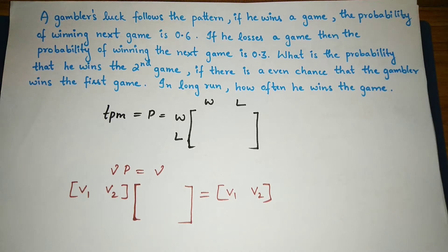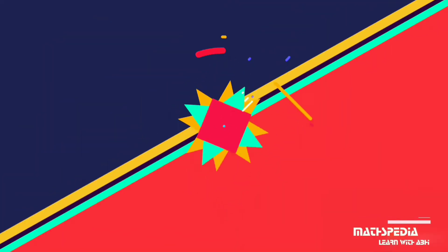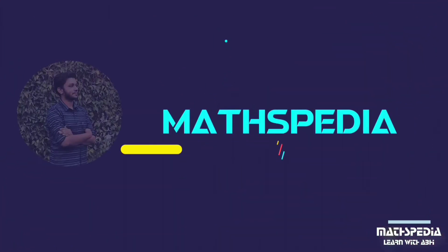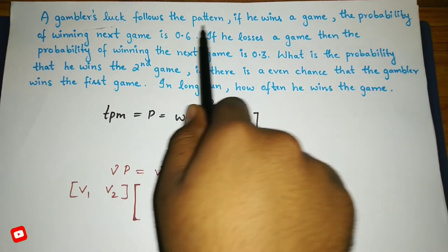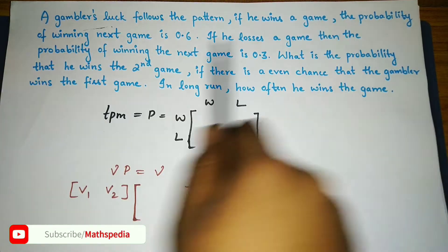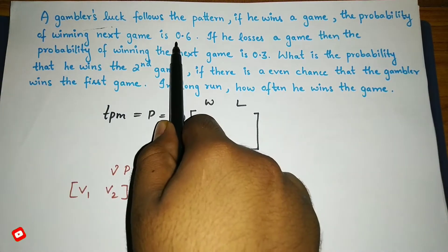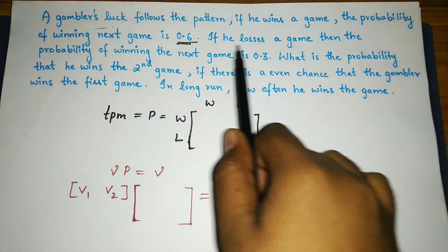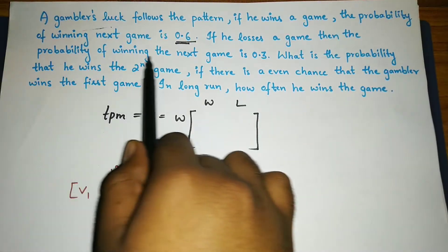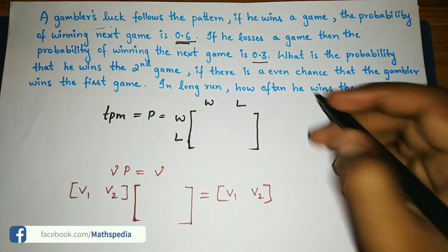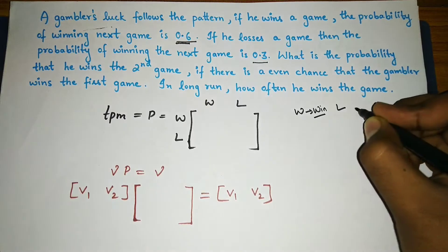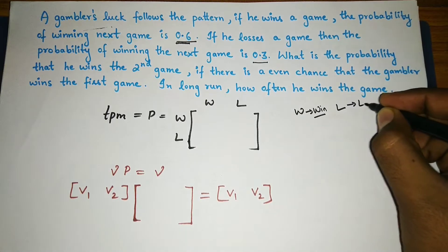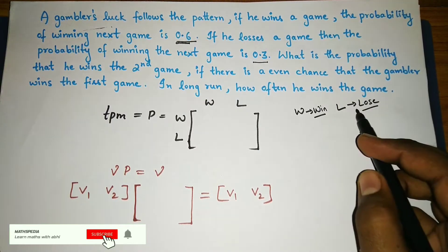Hello guys, in this video let us do one more problem based on Markov process — the TPM and how to form the TPM. A gambler's luck follows a pattern: if he wins a game, the probability of winning the next game is 0.6; if he loses a game, the probability of winning the next game is 0.3. I'll use W for win and L for lose, so there are two possibilities.